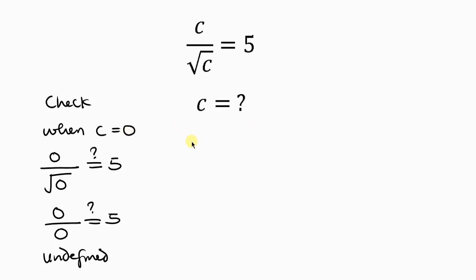Now let's go to the other value we've got, which is when C is equal to 25. So we have 25 over the square root of 25. Would this be equal to 5? Let's simplify.